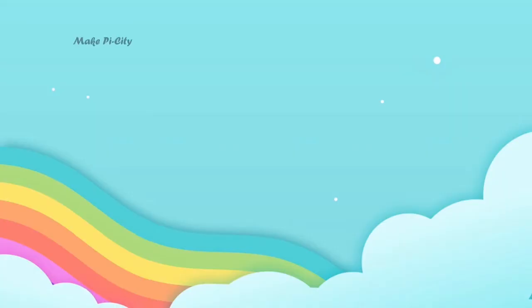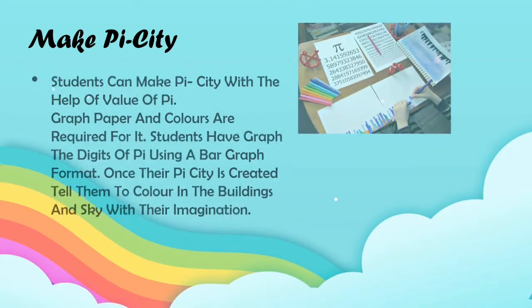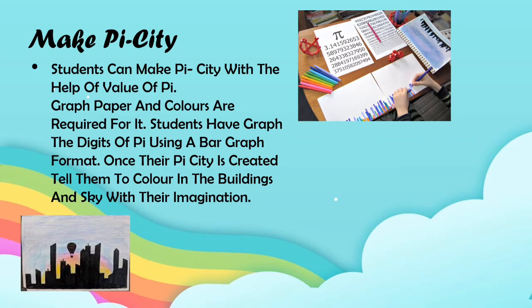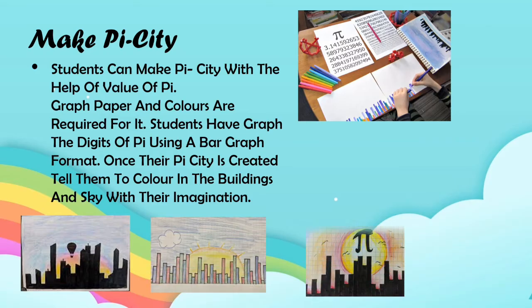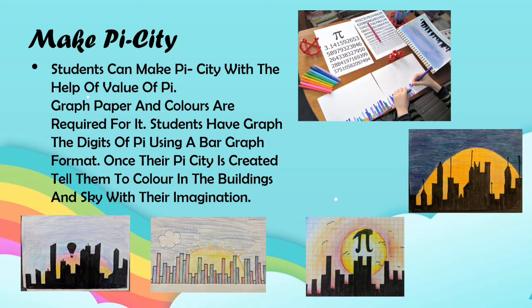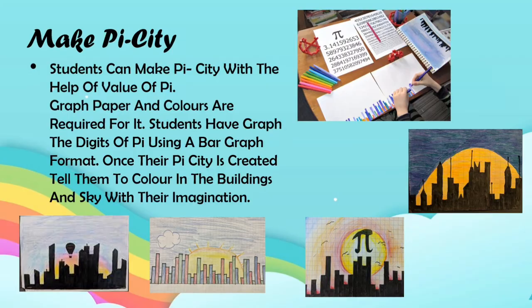Idea 4: Make Pi City. Students can make a Pi City with the help of the value of Pi. Graph paper and colors are required for it. Students graph the digits of Pi using a bar graph format. Once their Pi City is created, tell them to color in the buildings and sky with their imagination. See how beautiful it comes out!